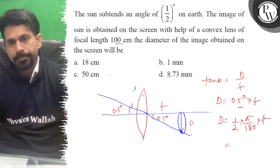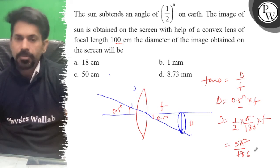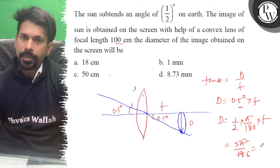So focal length, how much is it? 100. So 5π/18, I will calculate and it will come to 0.873.